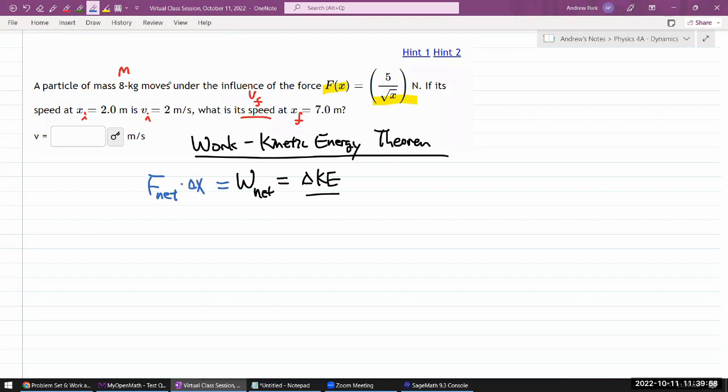And for the change in kinetic energy, you are being given some information. We should be careful and say that's final kinetic energy minus initial kinetic energy. So it's going to be one half m v final squared minus one half m v initial squared. I have non-zero v initial.